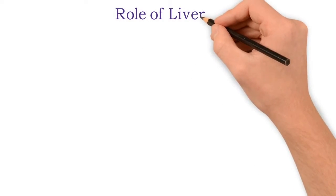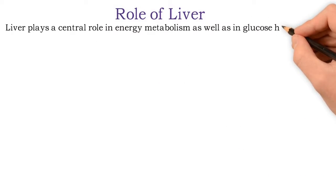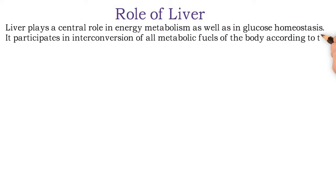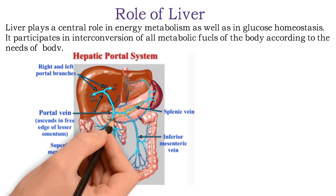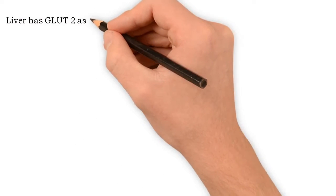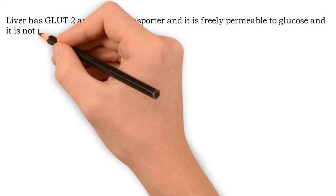The liver plays a central role in energy metabolism as well as glucose homeostasis. It participates in interconversion of all metabolic fuels according to the body's needs. It is centrally located in the circulatory system — blood from the intestine drains into the portal vein and flows into the liver, meaning products of digestion and absorption directly pass to the liver. Thus the liver regulates the supply of dietary fuels as well as its own reserves to other tissues. The liver has GLUT2 as its glucose transporter, which is freely permeable to glucose and not insulin dependent.